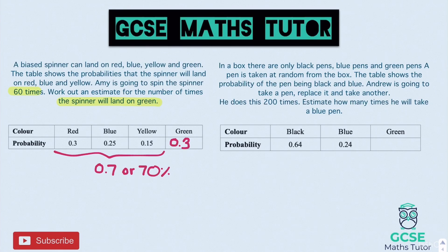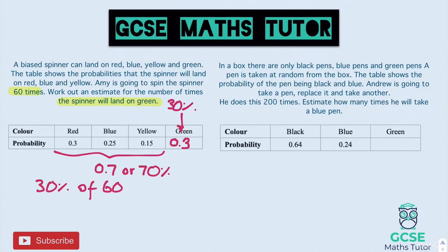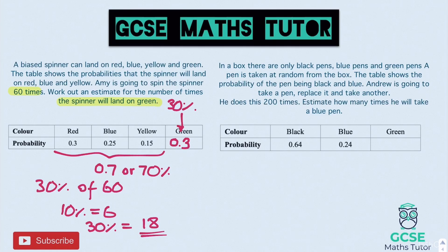Green is 30%, so we need to work out 30% of 60. Finding 10% first: 10% of 60 equals 6. Then 30% is three lots of that, so 30% of 60 equals 18. We would expect the spinner to land on green 18 times.